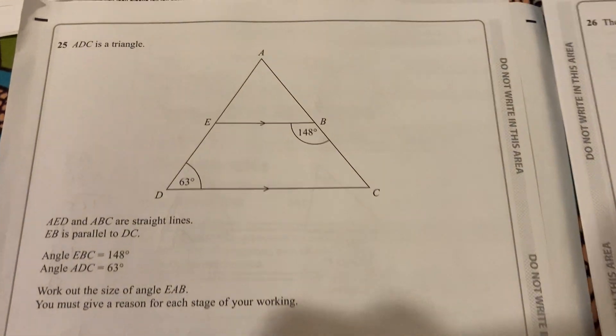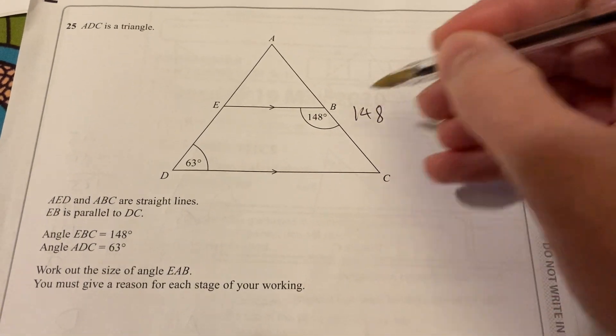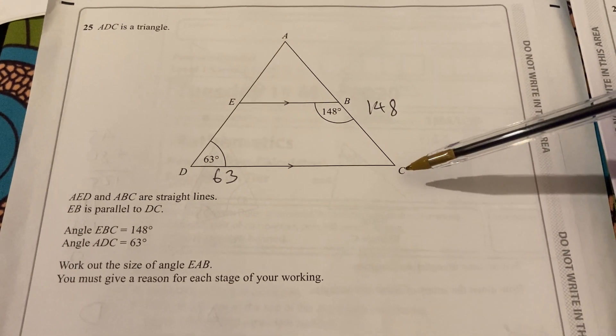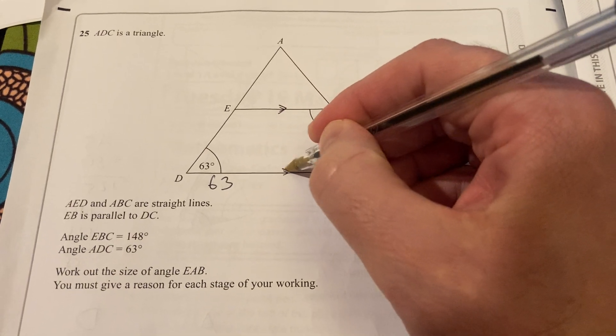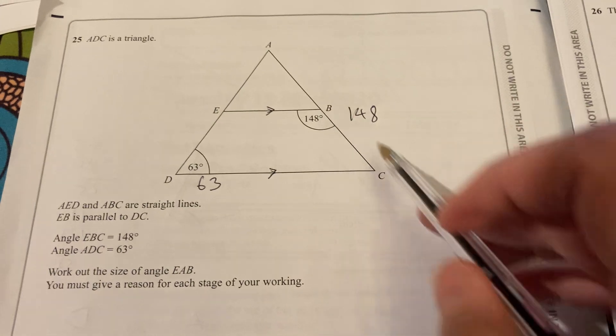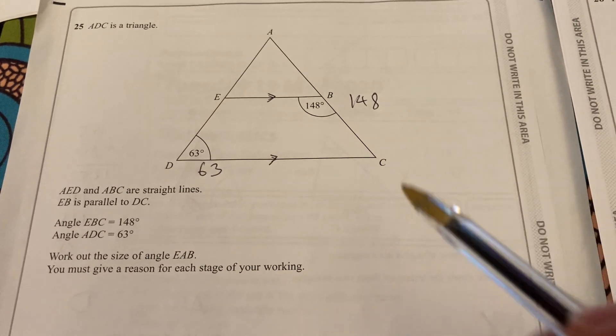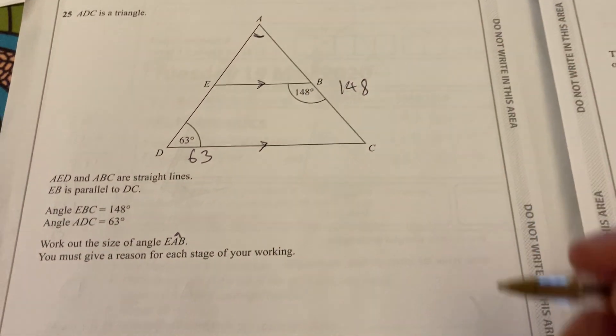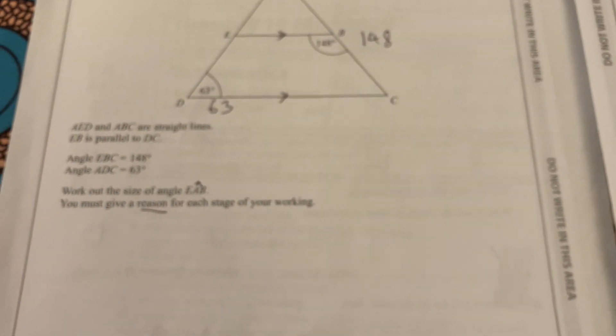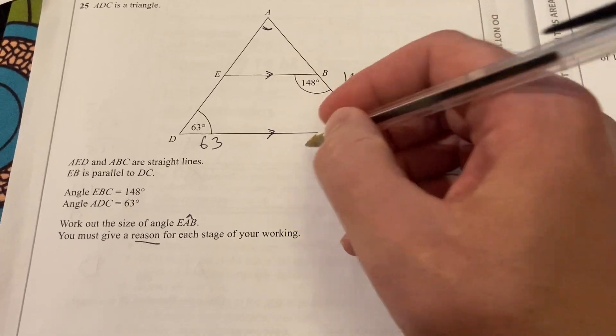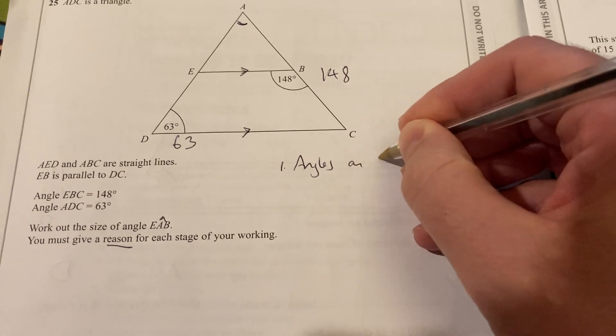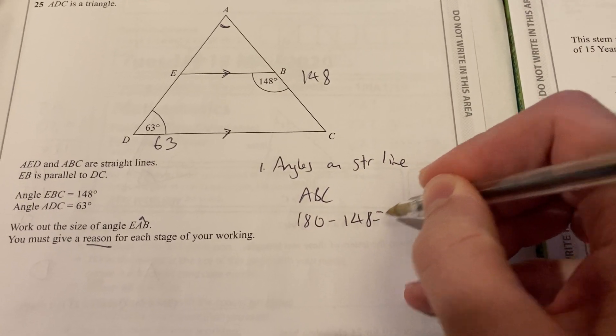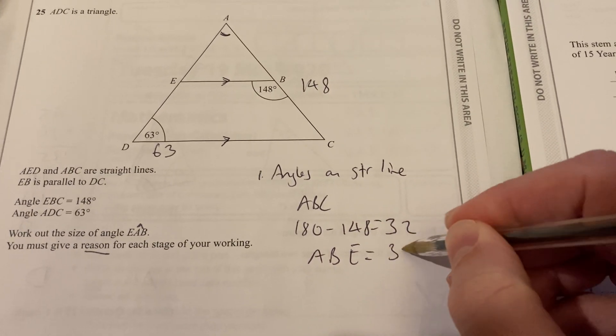Moving on to question 25. We have a triangle here. There's 148 degrees there and 63 degrees there. AED and ABC are straight lines in this triangle. And these two are parallel, denoted by those arrow marks there. And EBC is 148. And EDC is 63. We've got to work out EAB. So that means the angle centred at A there. So EAB. So we've got to work out that angle there. I must always give a reason. That's why lots of students do lose marks is by not giving that reason. So I'm going to use angles on a straight line here.